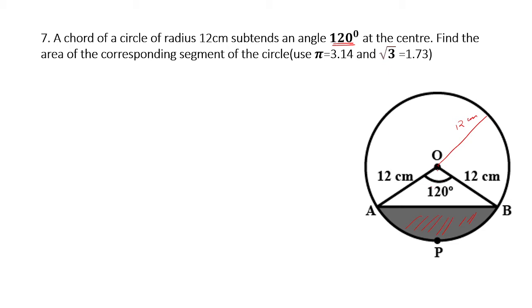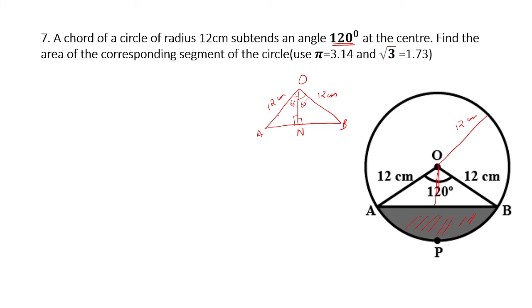So what I do is draw an angle bisector — a perpendicular line — such that it divides the 120-degree angle into two equal parts of 60 degrees each. Since it is a perpendicular line, the angle at the base becomes 90 degrees. I label the midpoint N, so this gives triangle AON with OA = 12 cm.